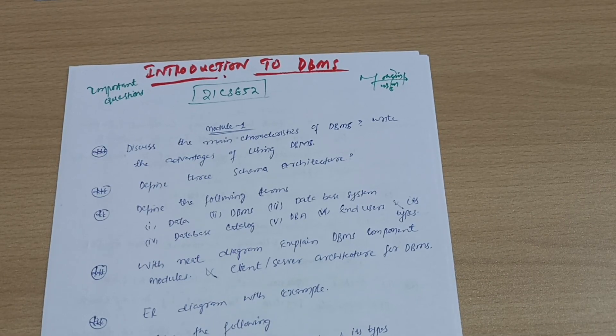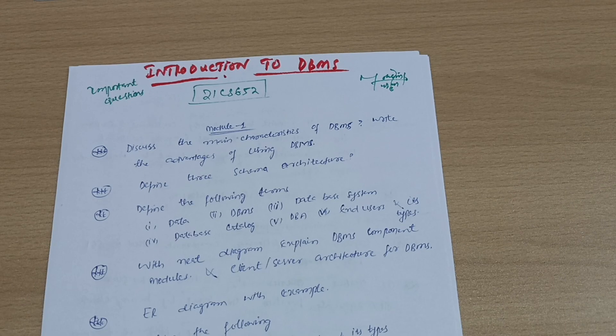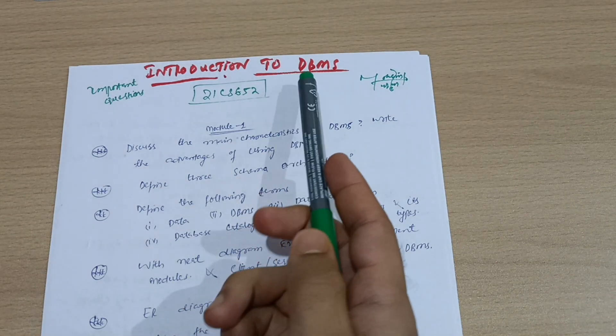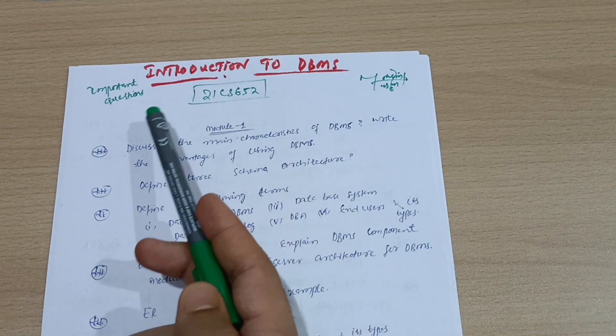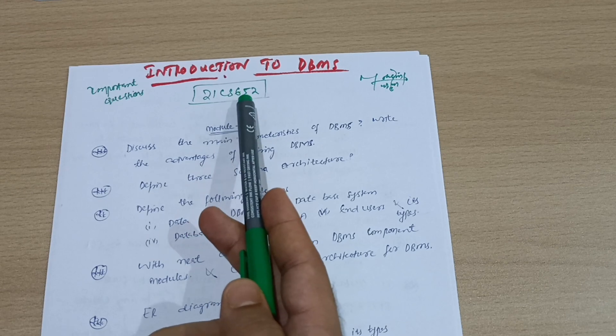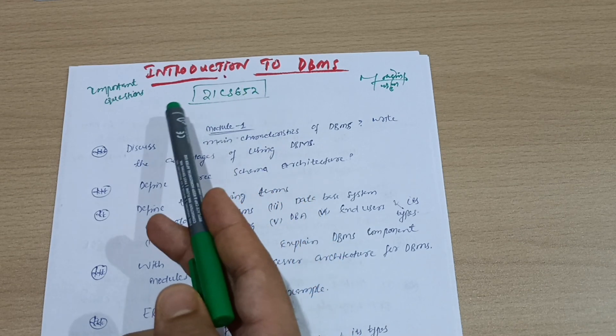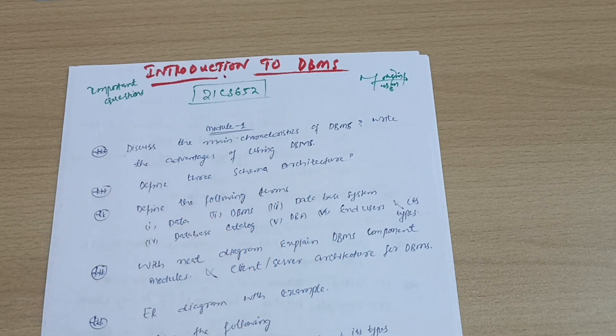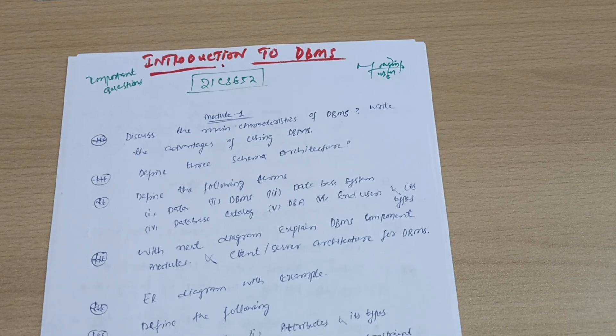Dear 6th semester students, welcome back to another video. Hope you are all doing well. Those who are having the subject Introduction to Database Management Systems, DBMS, subject code 21CS652, this video is for them. These are some super important questions which you should refer for this subject.